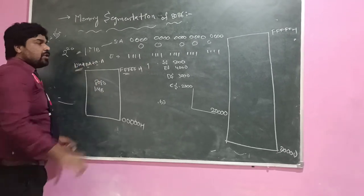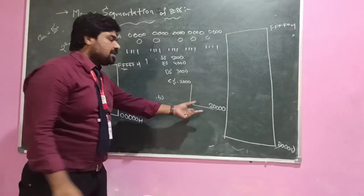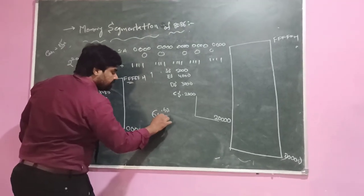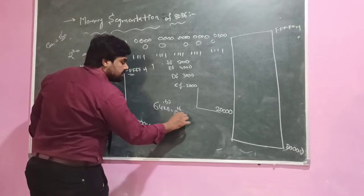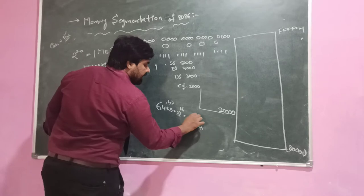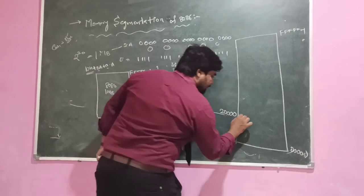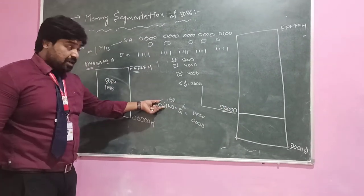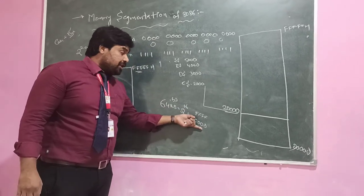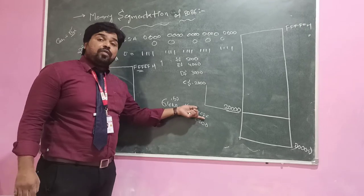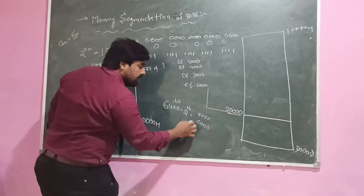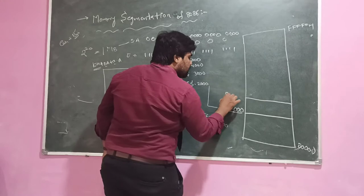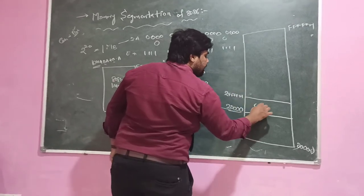We are going to calculate the starting address of the code segment. The capacity of each segment is 64K, which is 2 power 16. The code segment register holds 2000, so appending 0 gives starting address 20000H. The capacity is 64K so the ending address is 20000H plus 4FFFH. Therefore the code segment runs from 20000H to 2FFFFH.